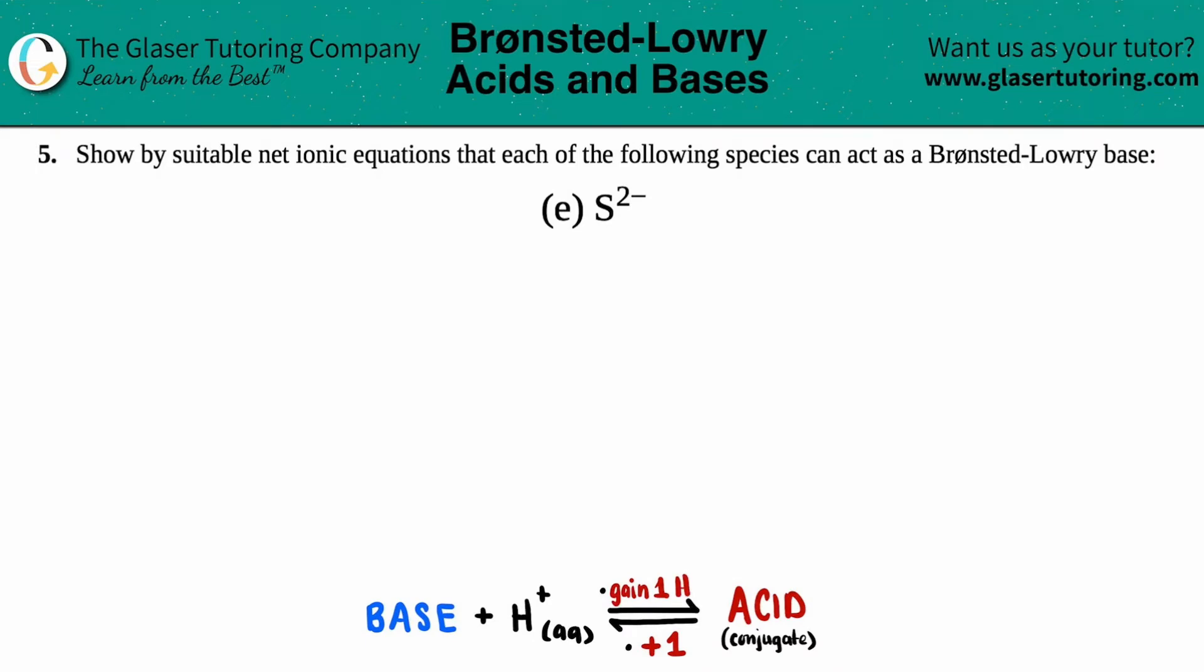Number five, show by suitable net ionic equations that each of the following species can act as a Brønsted-Lowry base, and then we have letter E. So in this case, we just need to write a net ionic equation just illustrating that S²⁻ can act as a Brønsted-Lowry base.